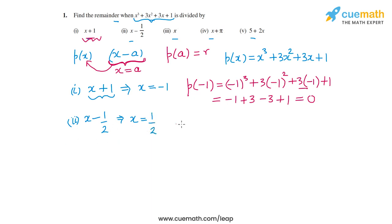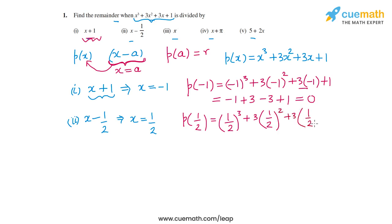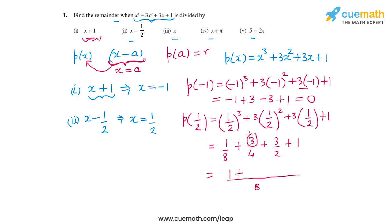Substituting x = 1/2 into p(x): p(1/2) = (1/2)³ + 3(1/2)² + 3(1/2) + 1 = 1/8 + 3/4 + 3/2 + 1. Taking LCM of 8: 1 + 6 + 12 + 8 = 27. So p(1/2) = 27/8.